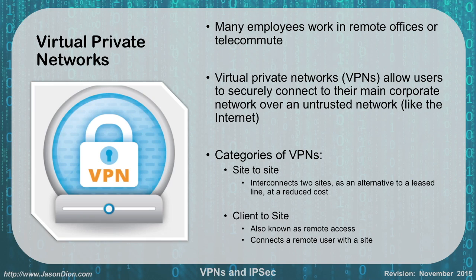We have two different categories of VPNs: site-to-site and client-to-site. Site-to-site is where we interconnect two different sites — maybe a remote site to our corporate headquarters, for instance. We can do this instead of having to use a leased line or a dedicated line; we can just use a local connection to the internet and then use the internet as our communications path with this encryption tunnel.